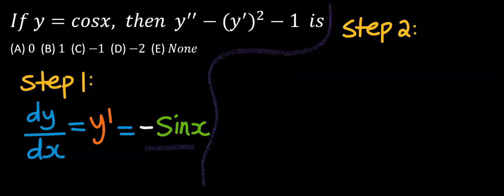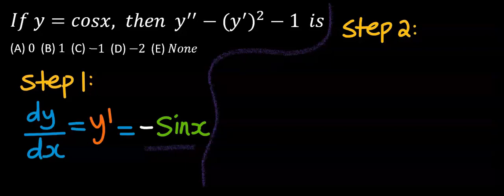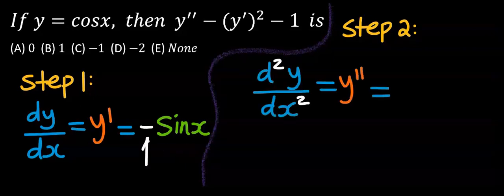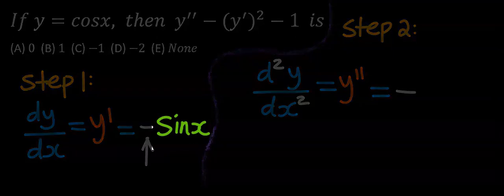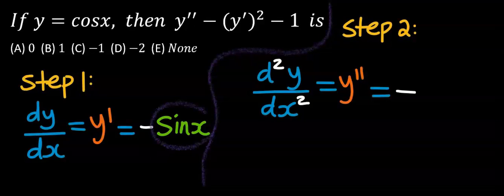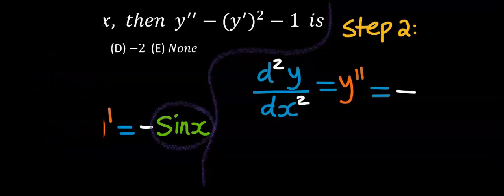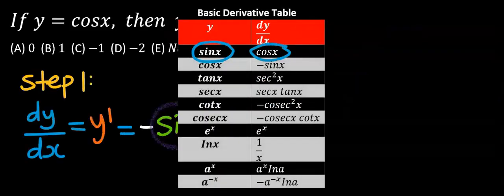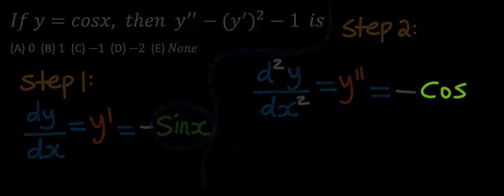In step number 2, we are going to find the second derivative. The first derivative got a minus, hence this will have a minus. We are going to differentiate sine x. From the basic derivative table, when you differentiate sine x, you are going to get cos x. And we are going to have minus cos x.